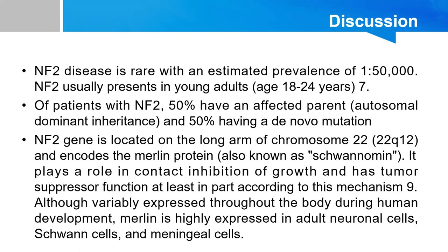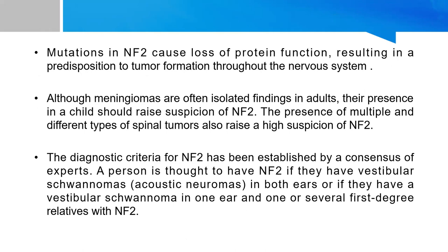Although variably expressed throughout the body during human development, Merlin is highly expressed in adult neuronal cells, Schwann cells, and meningeal cells. Mutation in NF2 causes loss of protein function, resulting in predisposition to tumor formation throughout the nervous system.